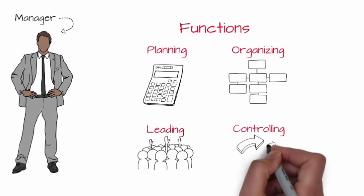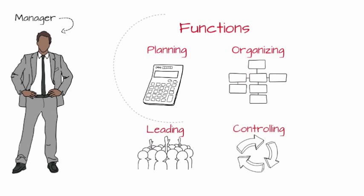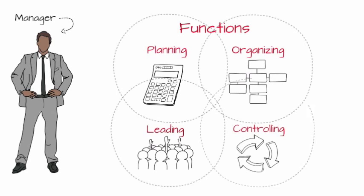An example of Controlling would be comparing budget with actual figures and taking corrective action if necessary. Please note how the interlocking circles are drawn around each function, showing the interrelationships and the dependencies upon each other.